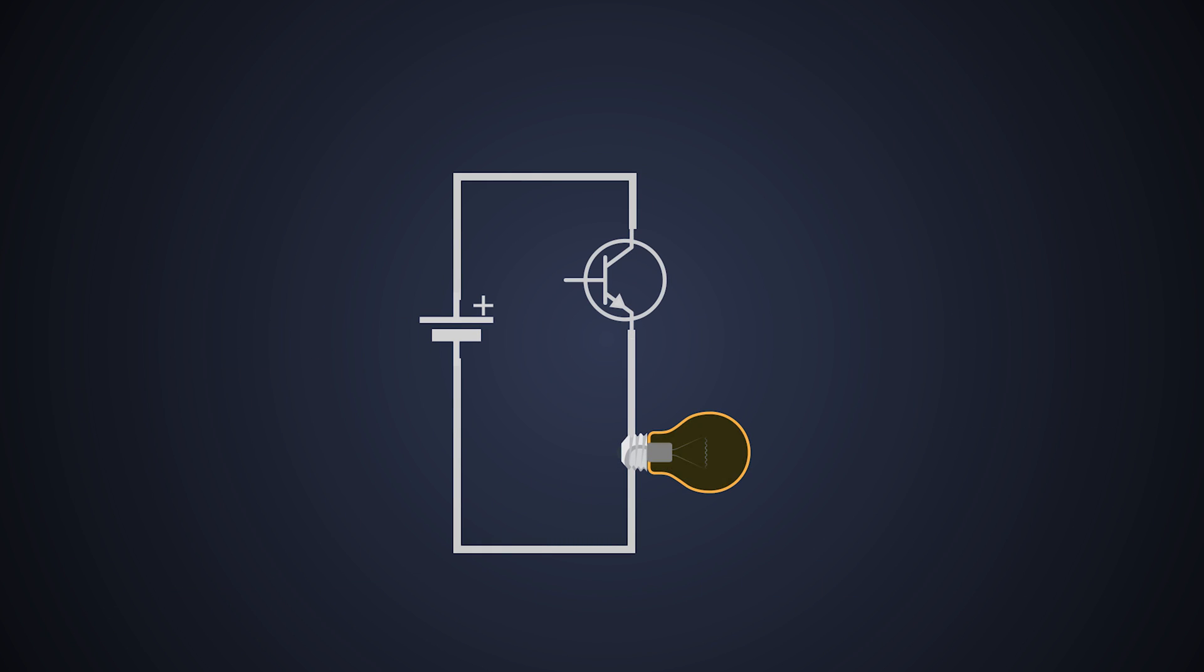Well, we can use an NPN transistor as a high side switch and there are many applications where we can do so. But using an NPN transistor as a high side switch is not an easy job. We need to have a different switching circuitry to do so. But do you know why? If you do, then please write your answer in the comment section, and we will discuss this problem in the next video.